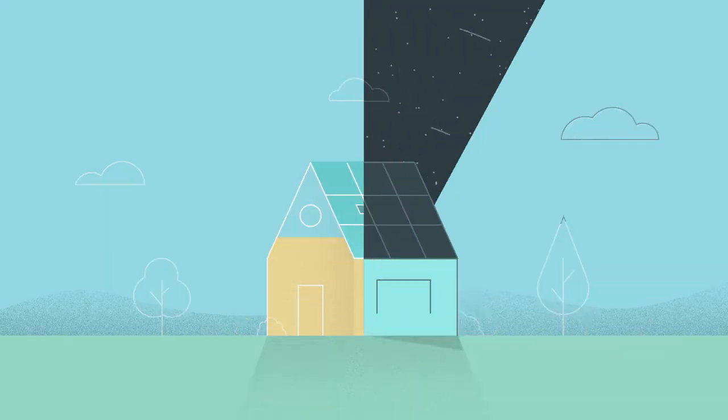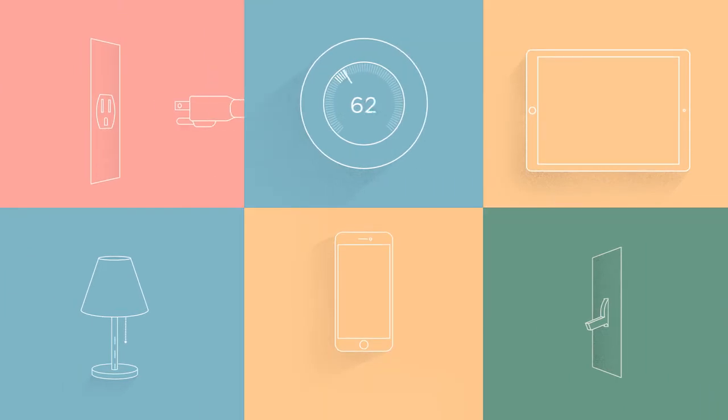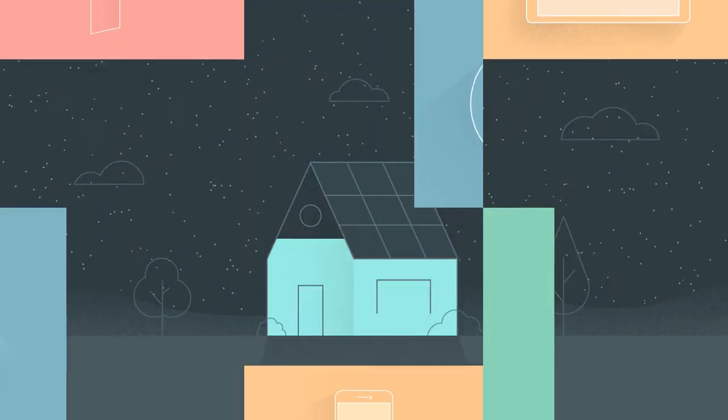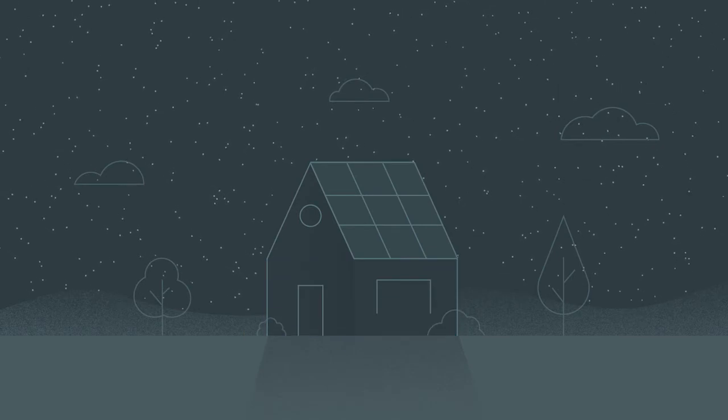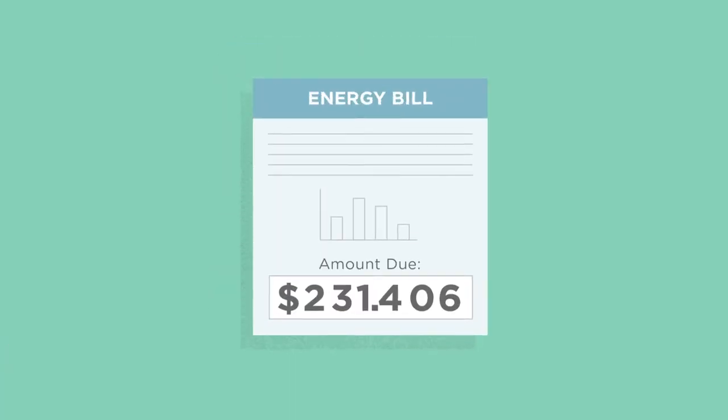At night or any time a household is using more energy than its solar panels are generating, the extra energy needed is pulled from the grid, and those solar credits are then used. It's like rollover minutes for your energy bill.